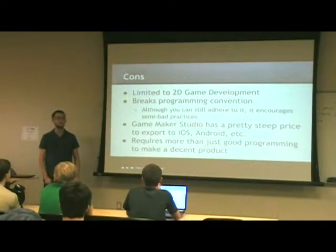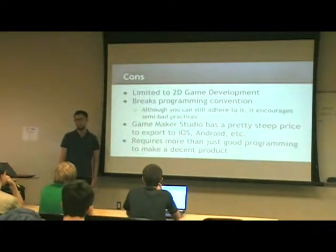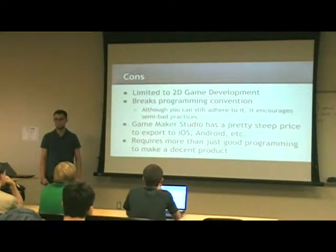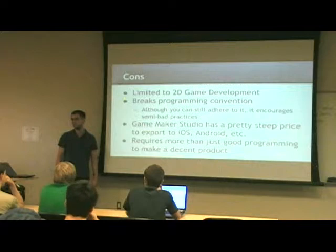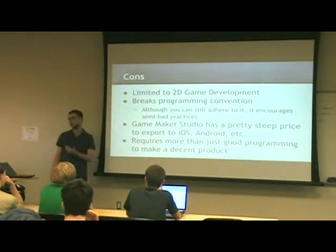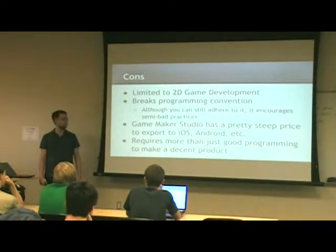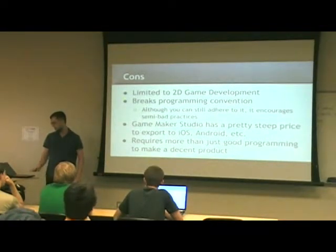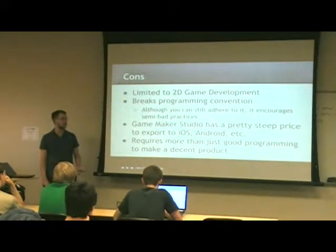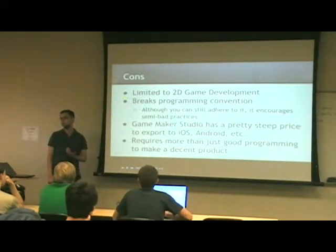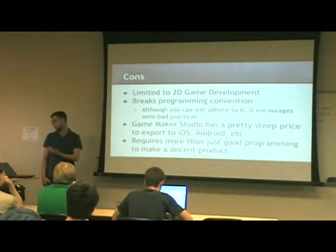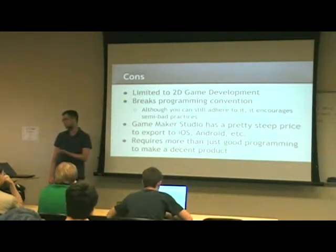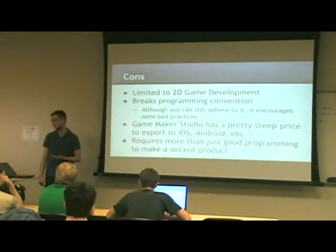Some cons: it's limited to 2D game development — if you want 3D, use Unity or Unreal. It also breaks programming conventions, like not requiring variable declarations, which takes some getting used to. GameMaker Studio requires you to pay for additional export modules — iOS, Android, etc. — on top of the base price, so it can cost around $200 to get everything, compared to the standard $20 that only exports to Windows or Mac.